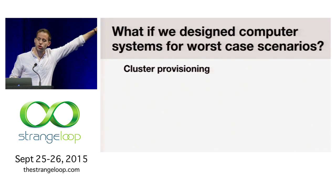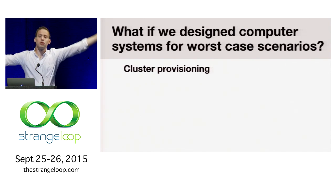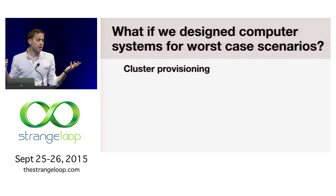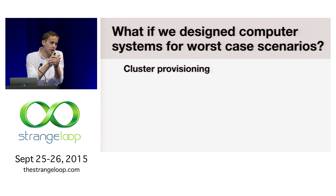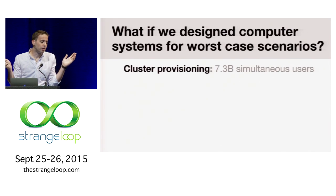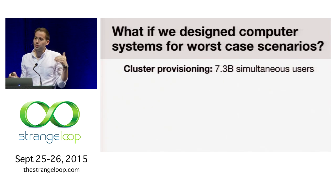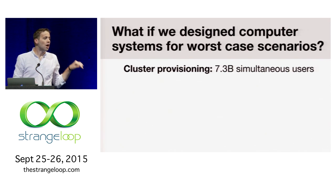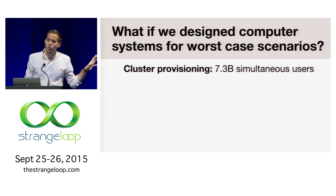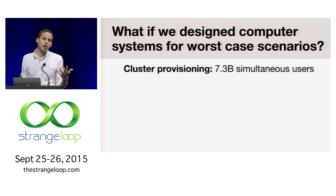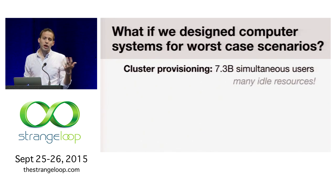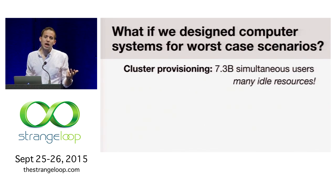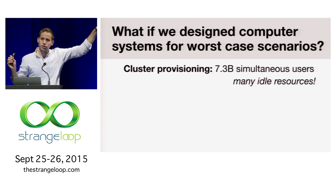If we take this question to an extreme — what is the absolute worst case our service might be up against — if you're essentially building an internet service, you might have to handle 7.3 billion simultaneous users: everyone on planet Earth logged into your site at once. You could probably buy enough hardware to service 7.3 billion users simultaneously, but for probably every application today, even Facebook, we'd end up with a bunch of idle resources if we provision for this crazy absolute load.